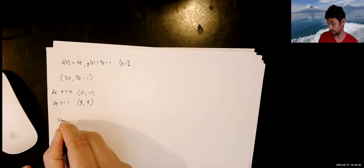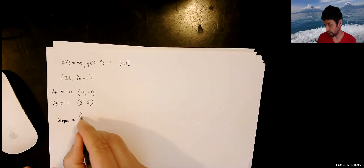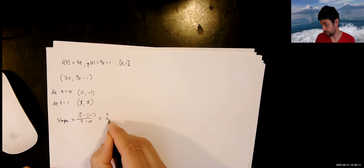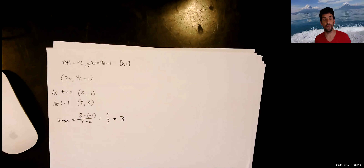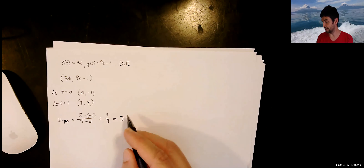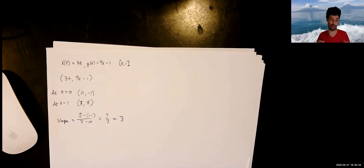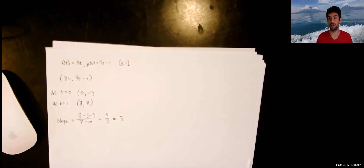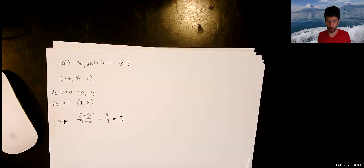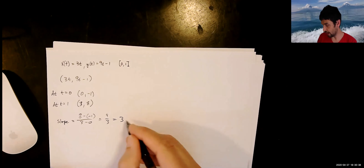I have computed the initial point and the terminal point — the point it spits out at the beginning of its journey and the point at the end — and I get these two coordinate pairs. So let's compute the slope of the line: 8 minus negative 1 over 3 minus 0 is 9 over 3, or 3.